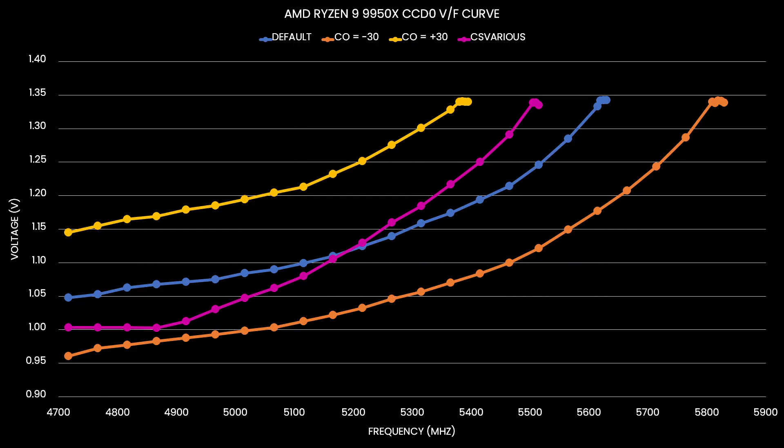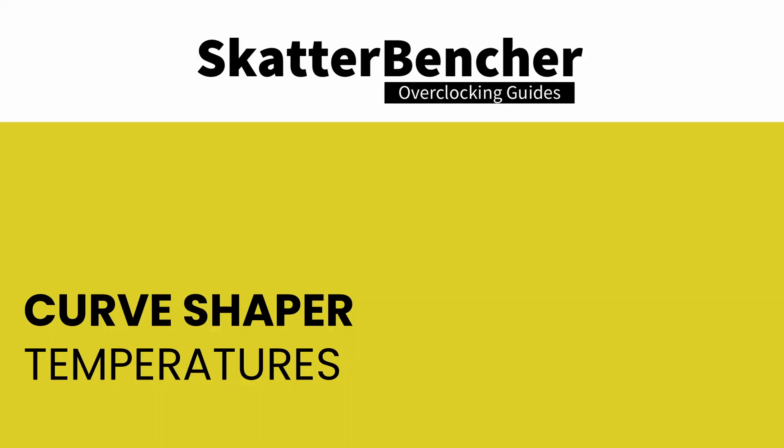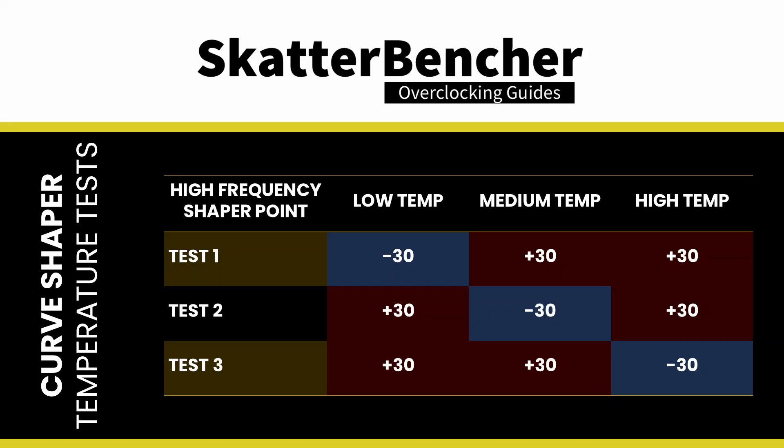In my first Curve Shaper video, I totally ignored the temperature dimension of Curve Shaper — let's have a look at it today. The idea is simple: we can have the Shaper point act stronger or weaker depending on the operating temperature. For example, we could say that we only want to undervolt when the CPU temperature is really high. Let's set up a test with the Ryzen 9 9950X CCD0, configuring the high-temperature frequency Shaper point with varying temperature configurations and looking at the behavior of the VF curve at 50°C.